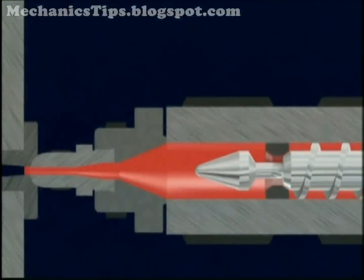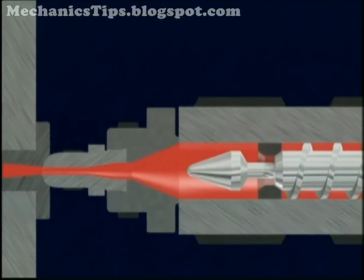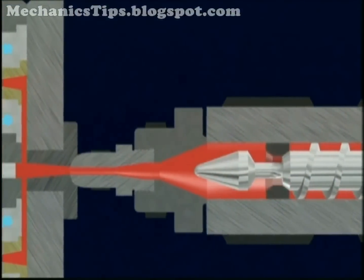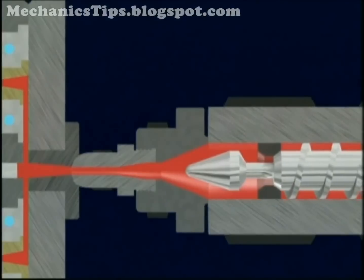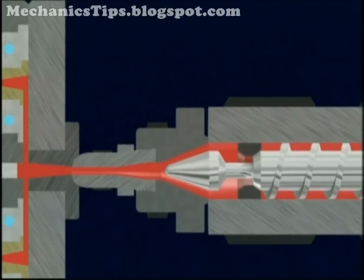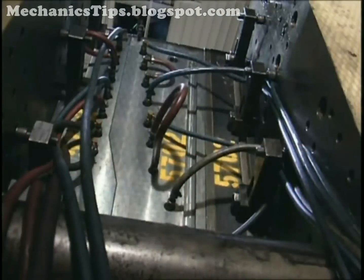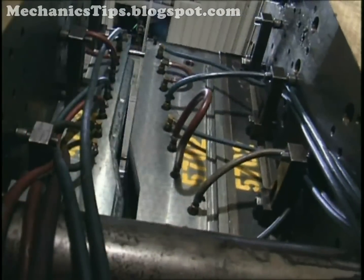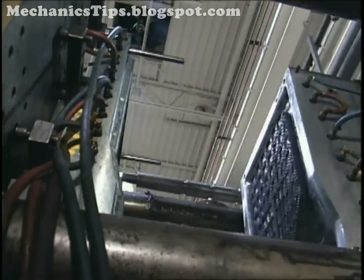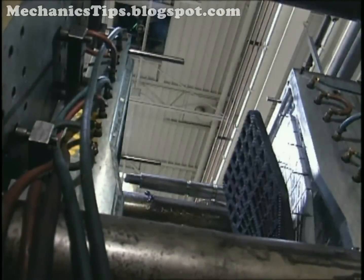In injection molding, molten plastic material is injected at high pressure into a mold containing the form of a part. Once this plastic cools and solidifies, the mold opens and the part is ejected.